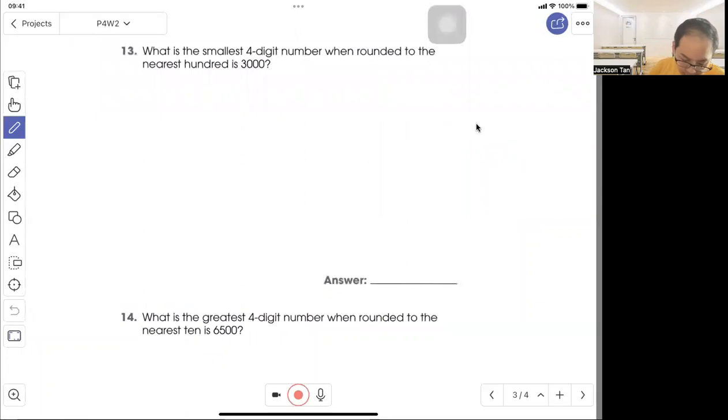Question 13: What is the smallest 4-digit number when rounded to the nearest hundred is 3000? So the smallest 4-digit number would be 2950. When you round off, you plus one, that gives 3000. So it's 2950.